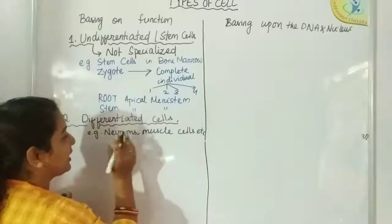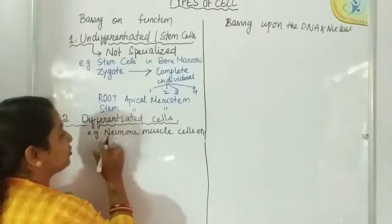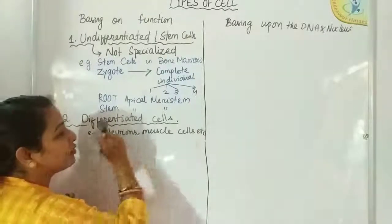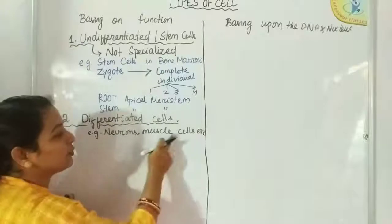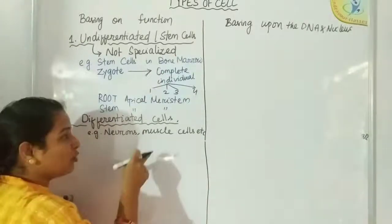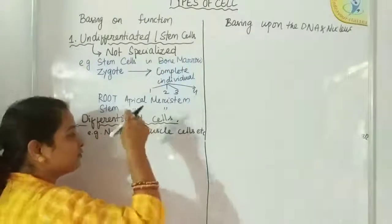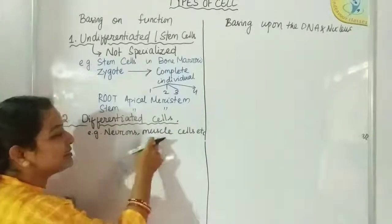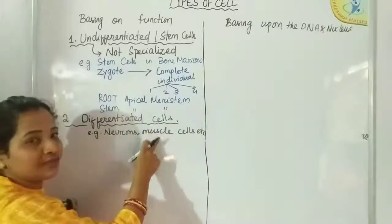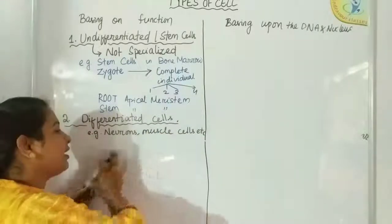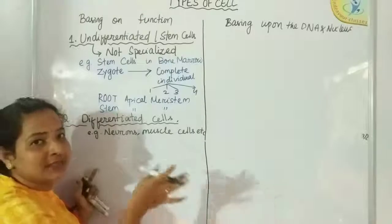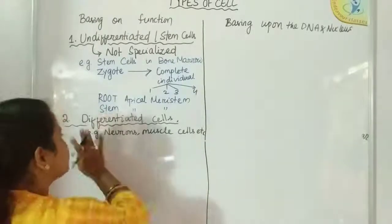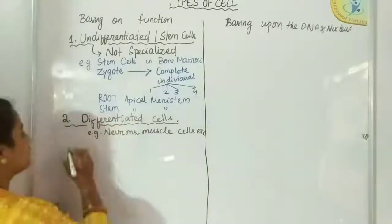The physiological function offered by neurons cannot be exhibited or performed by muscle cells, or vice versa — the function of muscle cells cannot be performed by neurons. They have already been distributed with their respective functions. So those are differentiated cells.